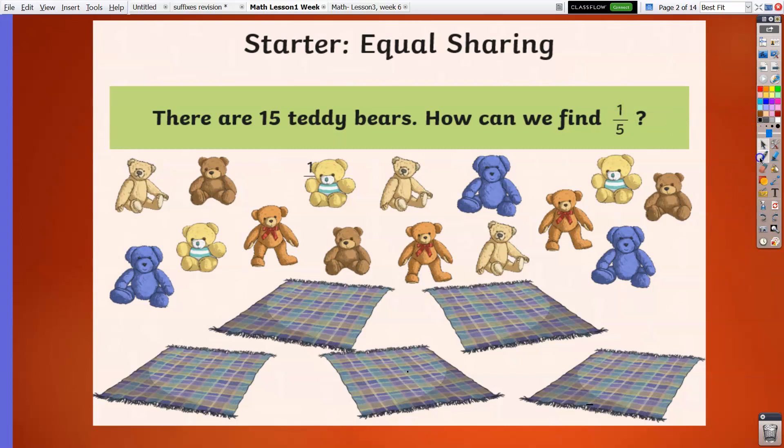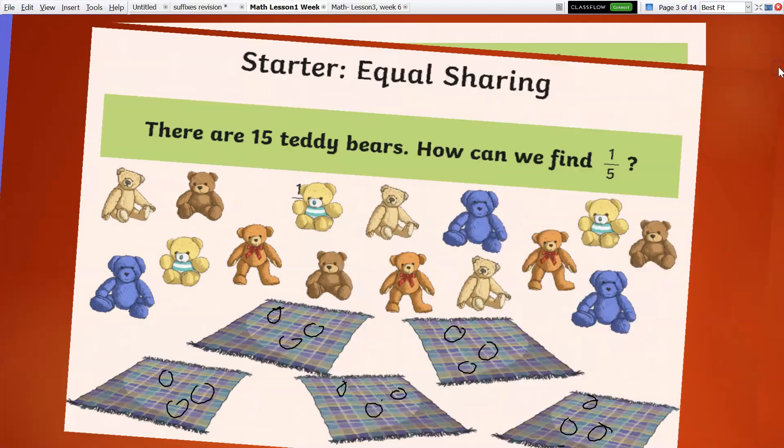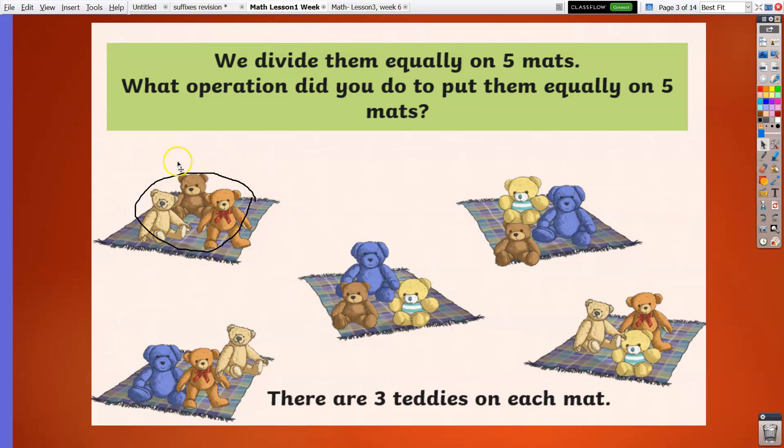Time is up. How are we going to get one-fifth of 15? From here we are going to divide 15 into 5. So we have 1, 2, 3, 4, 5, 6, 7, 8, 9, 10, 11, 12, 13, 14, 15. We have divided the teddy bears equally to each mat. Let's count inside the mats. 1, 2, 3. There are 3 teddy bears in each mat, so the answer is 3. Therefore, one-fifth of 15 is 3. Did you get the correct answer? Good job. If not, stay tuned for this topic.